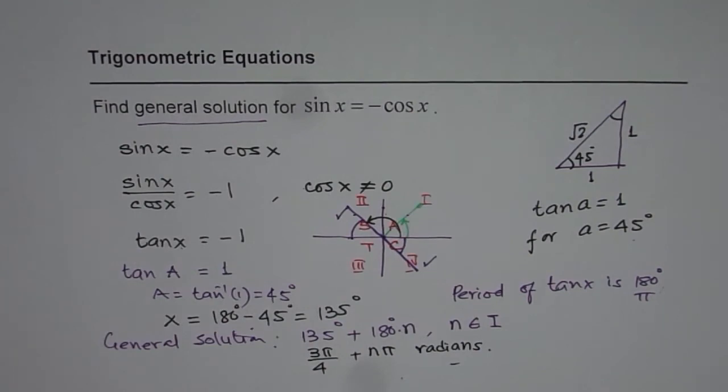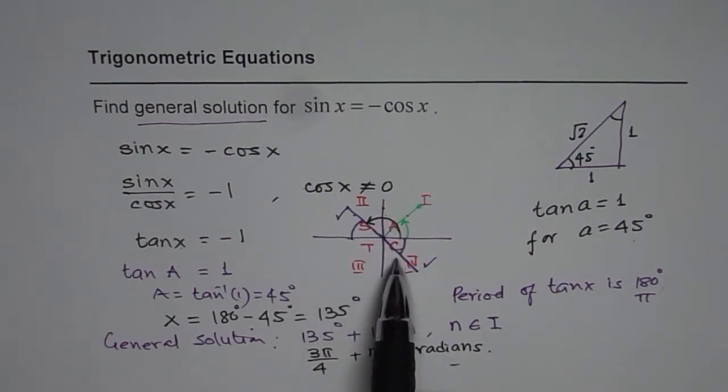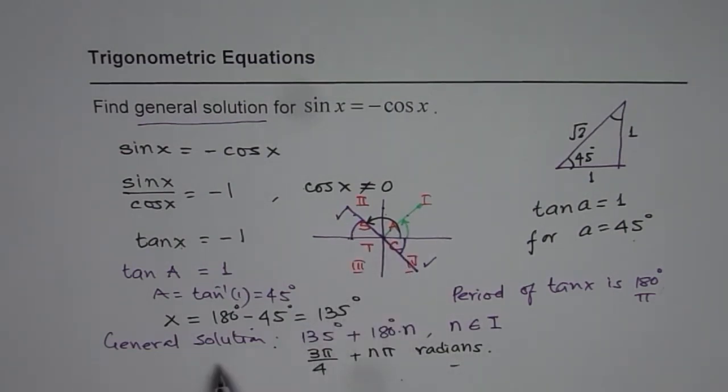So the idea here is whenever you are solving a trigonometric equation, you try to figure out in which quadrant the solution lies. Find the value of acute angle, and then find the other answers. And lastly, you should write, if asked for general solution, in terms of including the periodicity of the trigonometric ratio. For tan it is 180 degrees or π. For sine and cosine it is 2π or 360 degrees. I hope this will help you to solve many trigonometric equations. So this is a very basic starting but I think it gives you a good foundation.